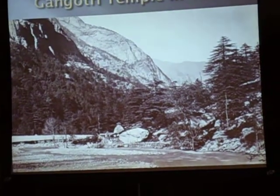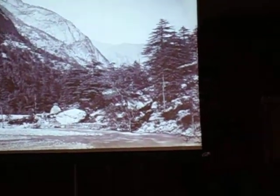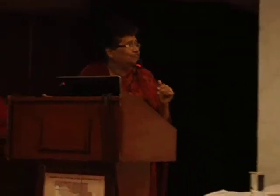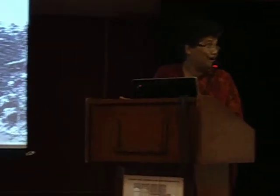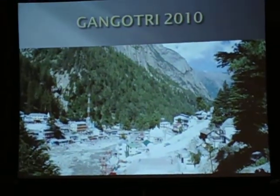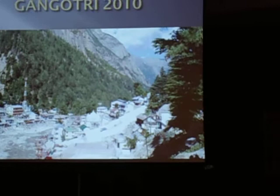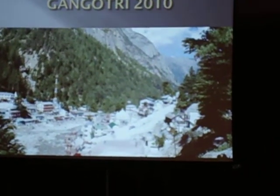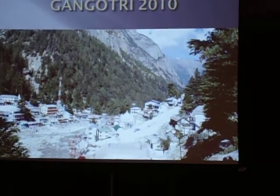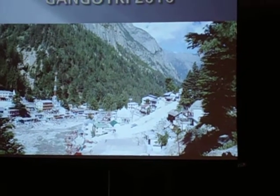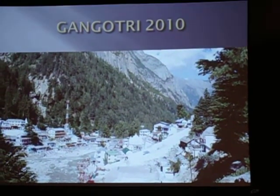This is the Gangotri settlement and Gangotri temple in 1866. The small temple is there and the whole area is covered with trees, with the Bhavirati river flowing. How it looks now — the small green tin shade behind, the temple is here — the small temple you saw in the previous picture. Now the big Gangotri temple has come up there, the whole settlement has come up, the trees are cut, and the Bhavirati river is flowing here.